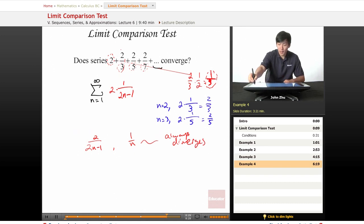So let's see if their limit works out. Limit as n approaches infinity of 2 over 2n minus 1 times n over 1, which equals limit as n approaches infinity 2n over 2n minus 1.